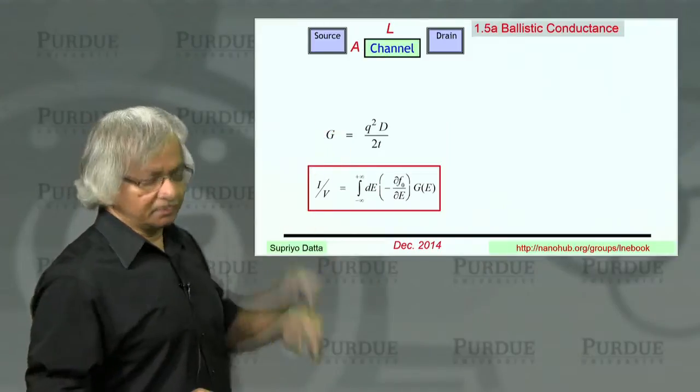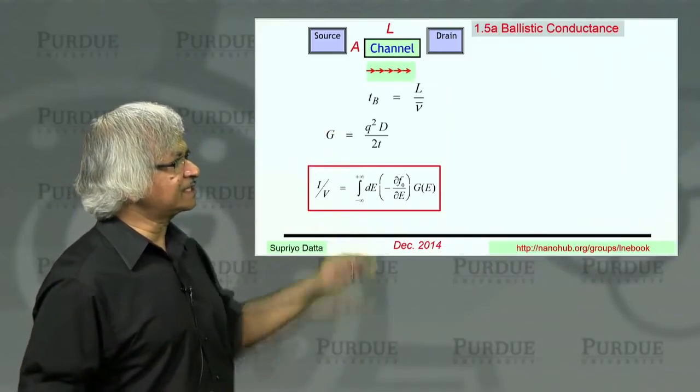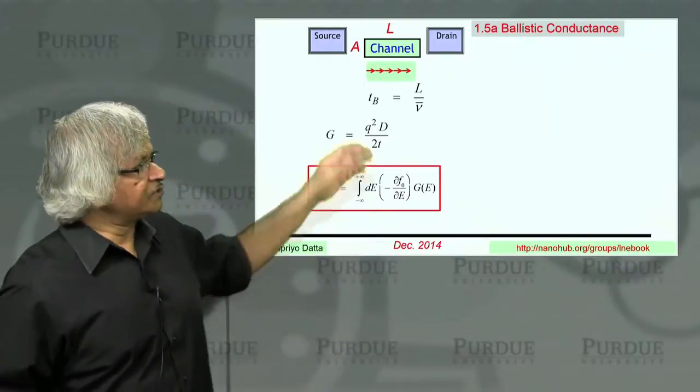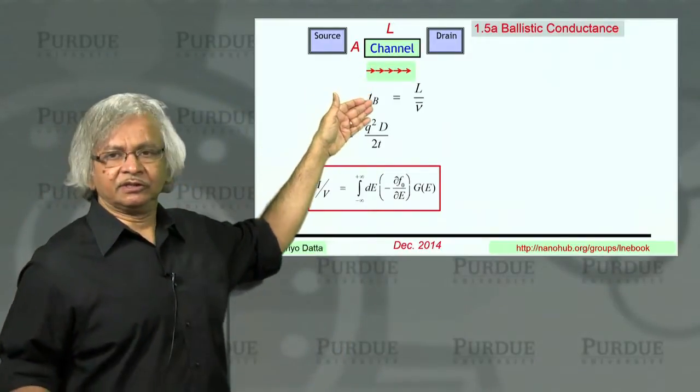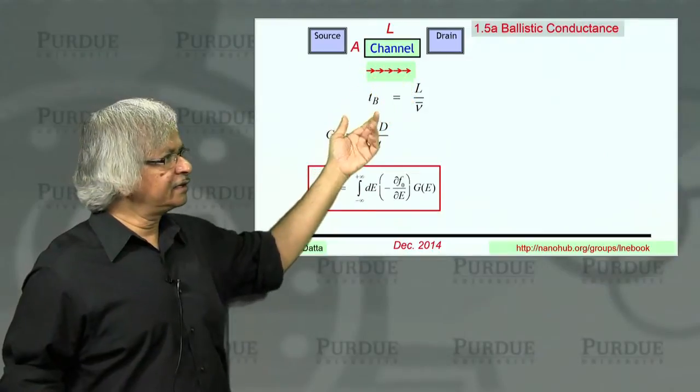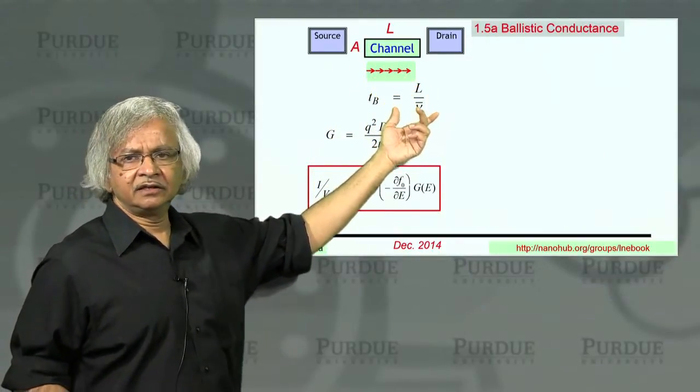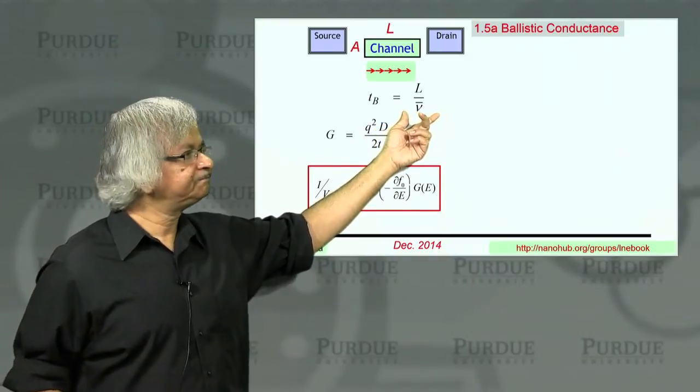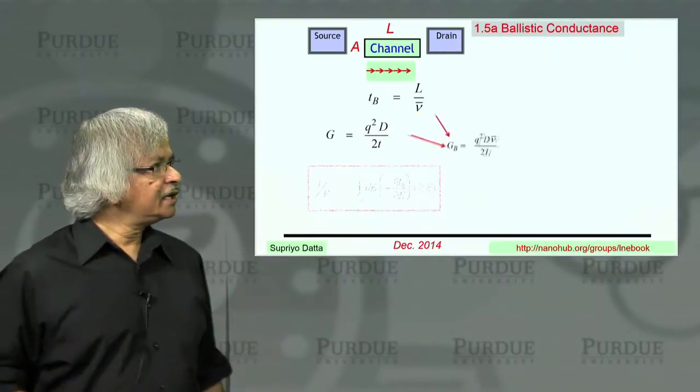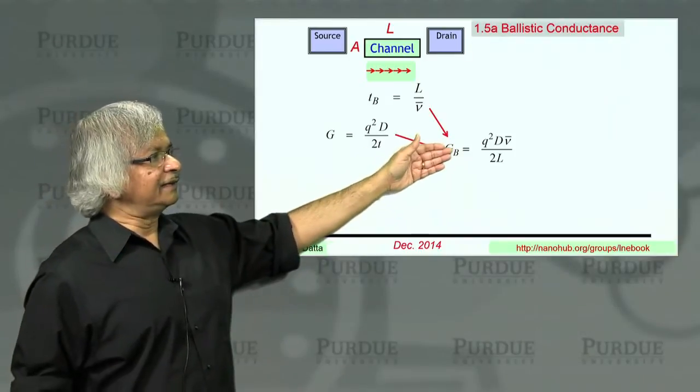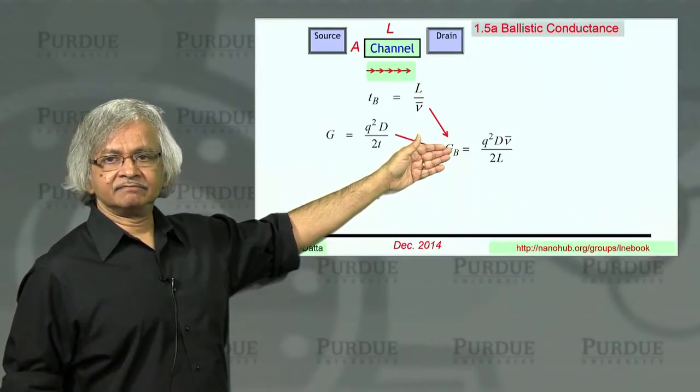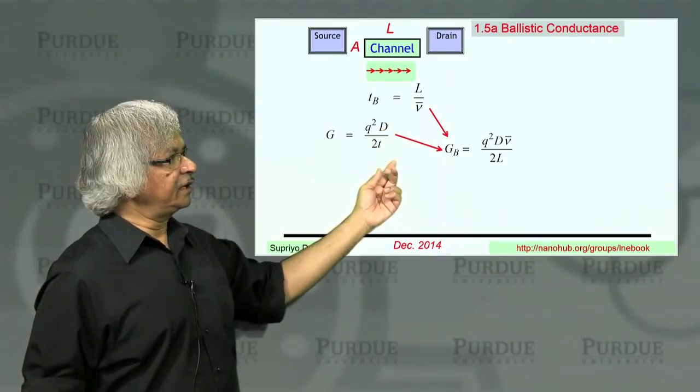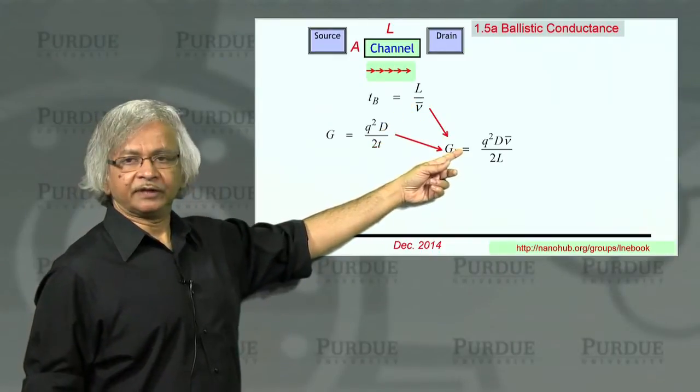So what about the ballistic conductance? Ballistic means that electrons go through the channel like a bullet. And so it's straightforward to write down the time it will take to get from left to right. It's just the length of the channel divided by the average velocity, this velocity of the electron. So if you combine those two things, you get an expression for the ballistic conductance. I just put this time from here into this expression, and that's what you'll get.